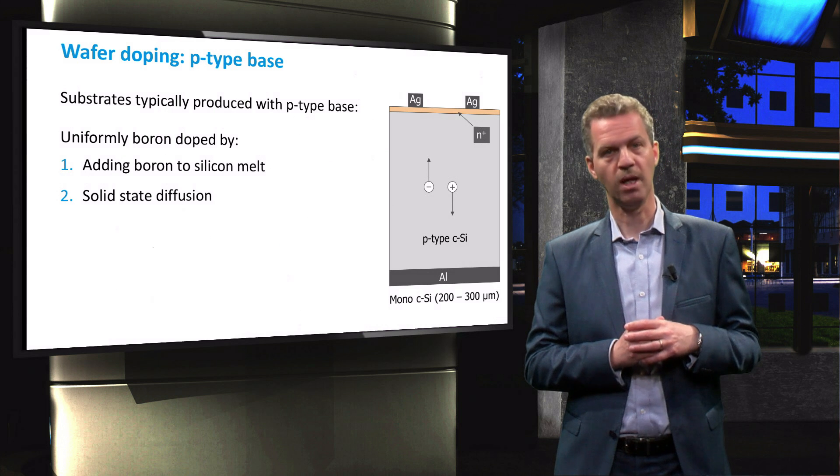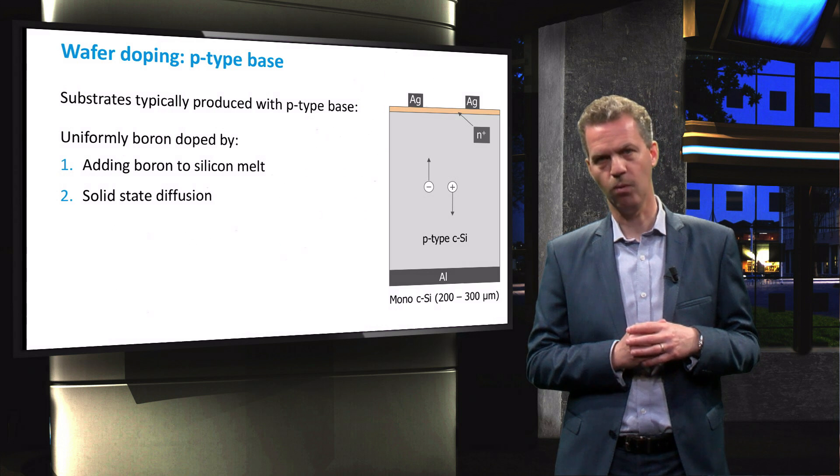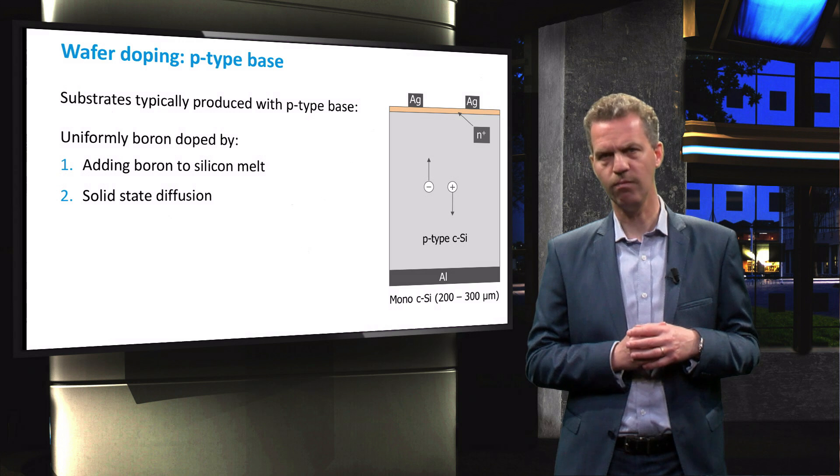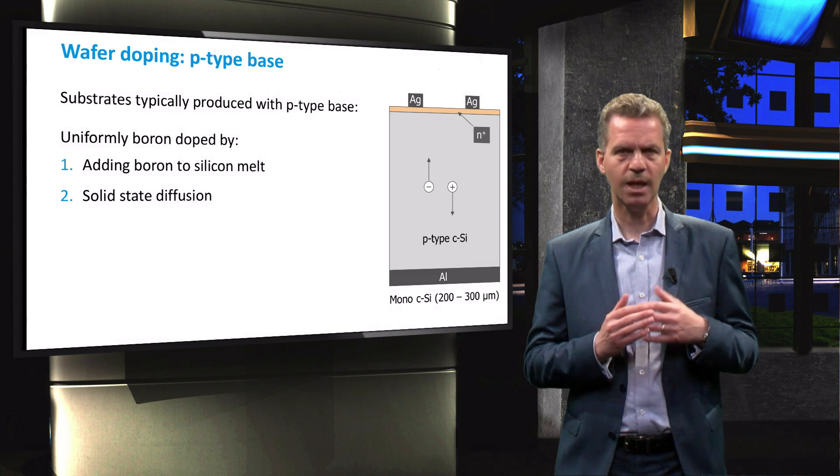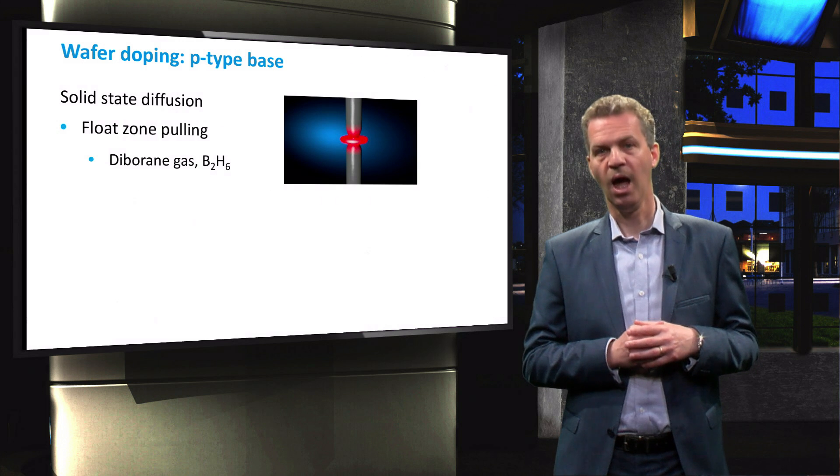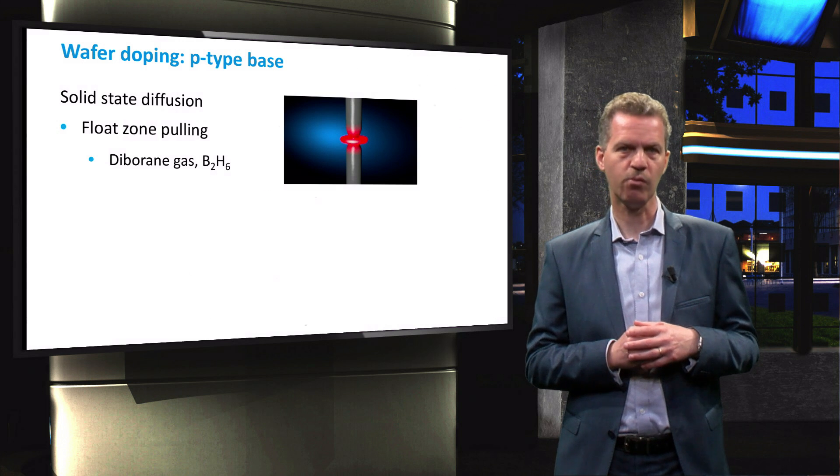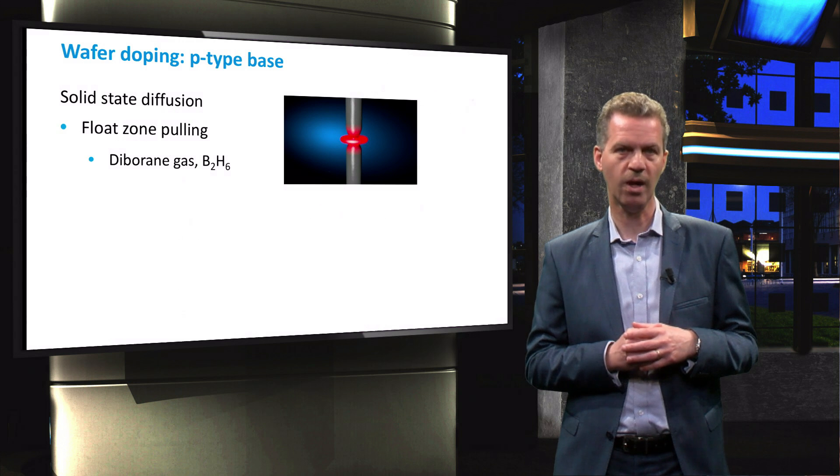The second method to obtain uniformly doped P-type wafers is by solid state diffusion where the doping atoms diffuse into the wafers in solid phase from a gas phase. This method is adopted in the production process of float zone wafers.